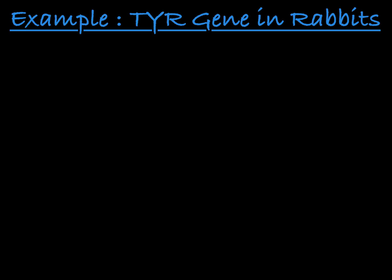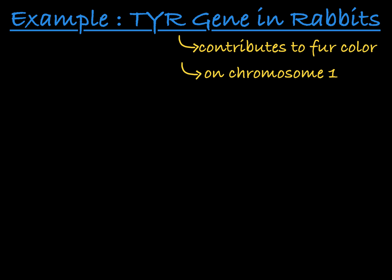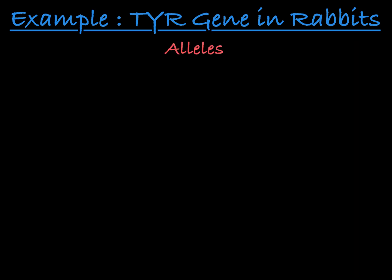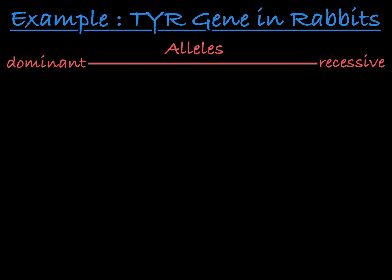An example of a gene with multiple alleles is the gene TYR, which encodes the fur color of a rabbit. The gene TYR is located on chromosome 1 of the rabbit. It has four different common alleles or versions, and these alleles exist in a series of dominance, from most dominant to fully recessive.